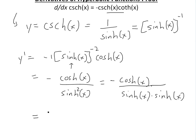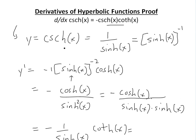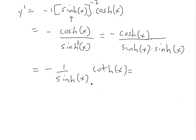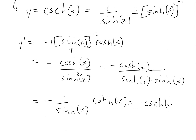This will equal negative one over sinh of x, and these two combined equal cotangent hyperbolic of x by definition. The bottom equals hyperbolic cosecant of x. So this equals negative cosecant hyperbolic of x times cotangent of x.